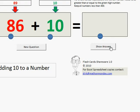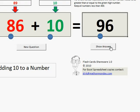Let's have a look. There you go. 86 plus 10 is 96.